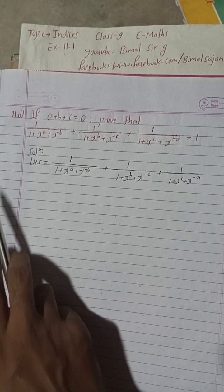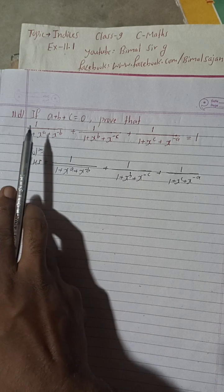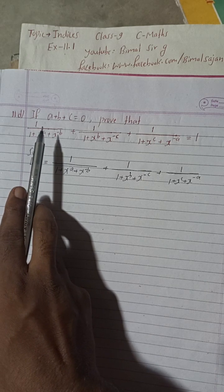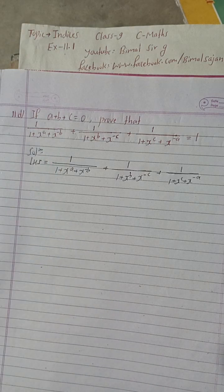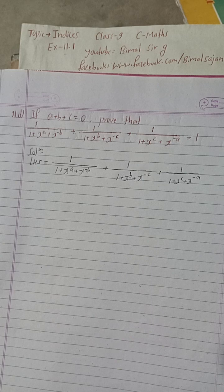Hi everybody, welcome back to Bimbal Sarji YouTube channel. This is question number 11D of creative section exercise 11.1 in chapter Indices, class 9 compulsory mathematics. The question is: if a plus b plus c is equal to 0, prove that 1/(1+x^a+x^(-b)) plus 1/(1+x^b+x^(-c)) plus 1/(1+x^c+x^(-a)) is equal to 1.